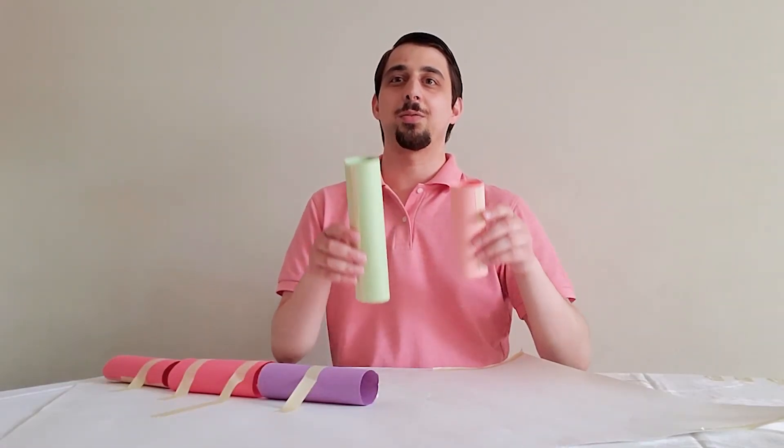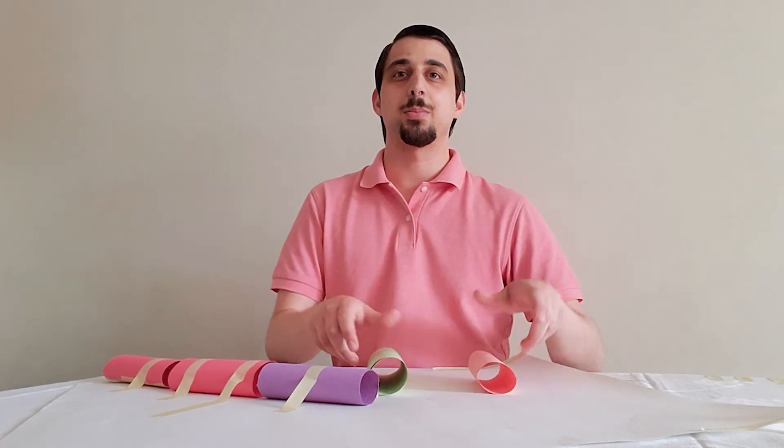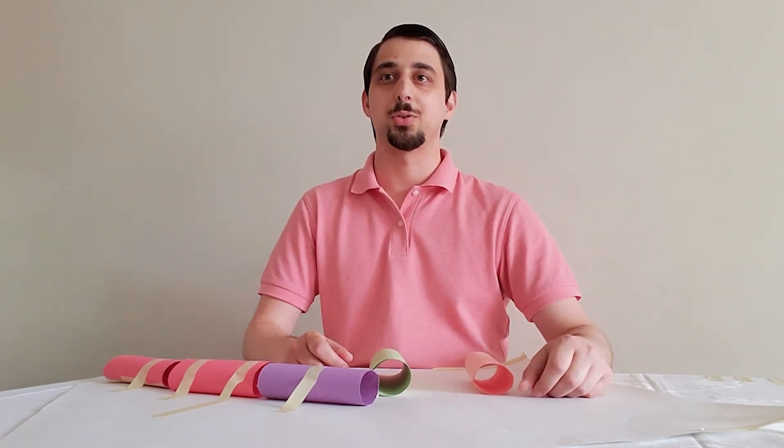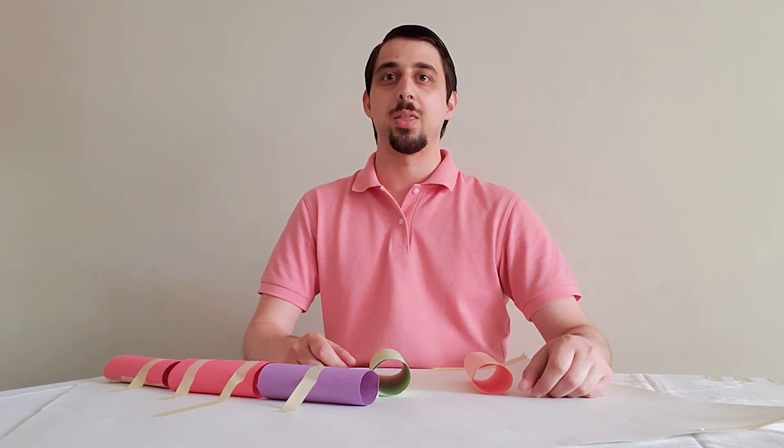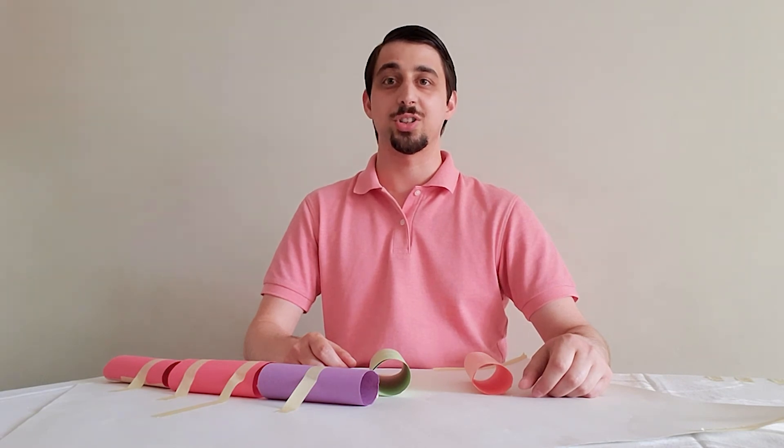After we have the tubes all rolled up, we can start assembling the racetrack by taping the paper tubes on the poster board or cardboard box. Then, we can tape the second tube next to the first one and so on, just like this.